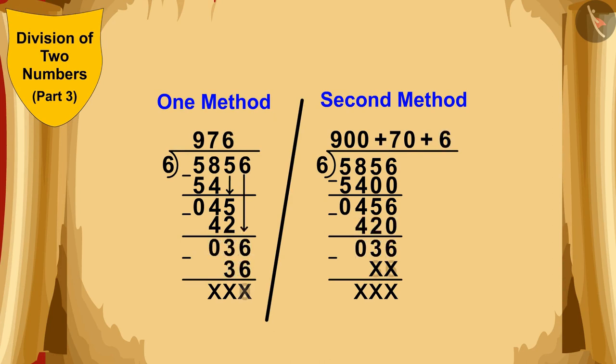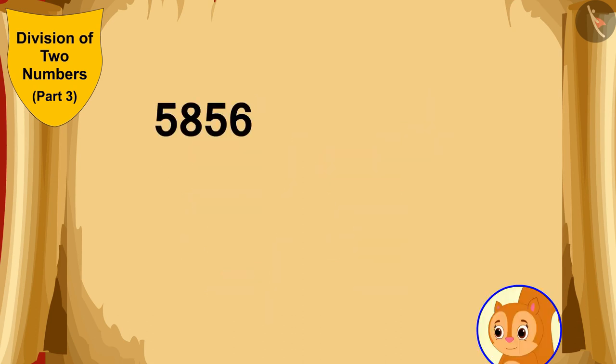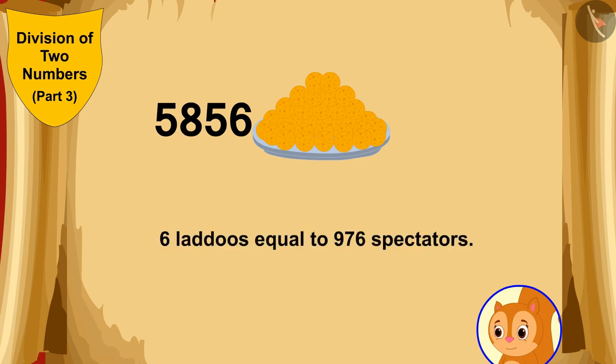We can find a solution to this question by these two procedures. Well done children! Your friend has also found the answer perfectly. The answer is exactly the same for both of you. Chanda will be able to distribute 5,856 laddus in groups of 6 laddus to 976 spectators.